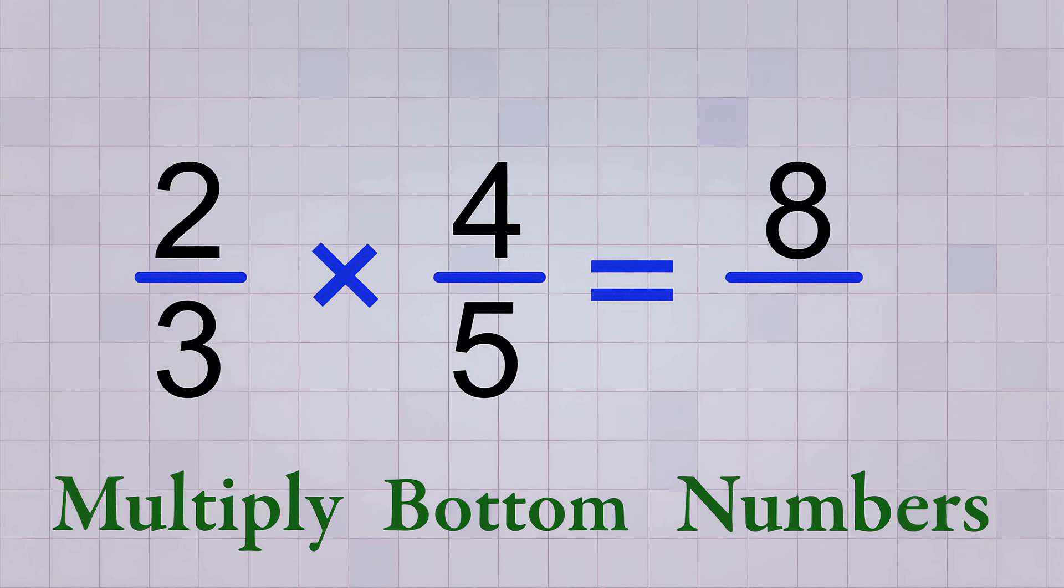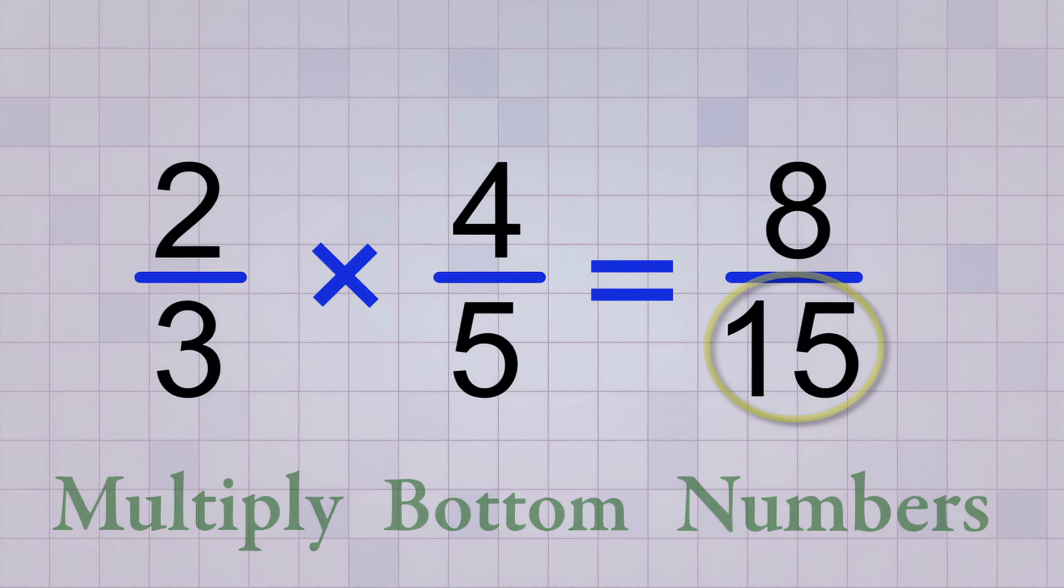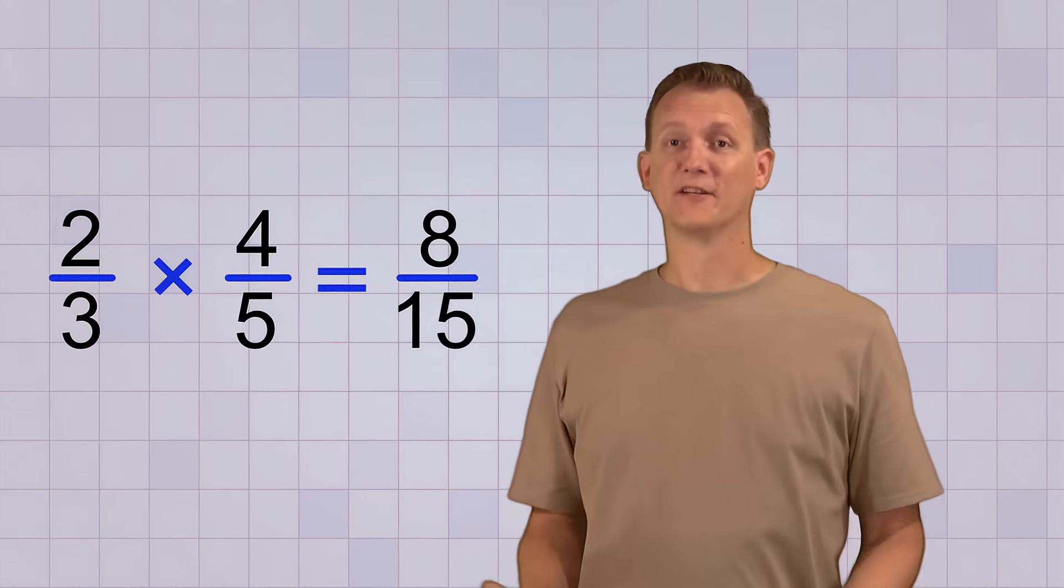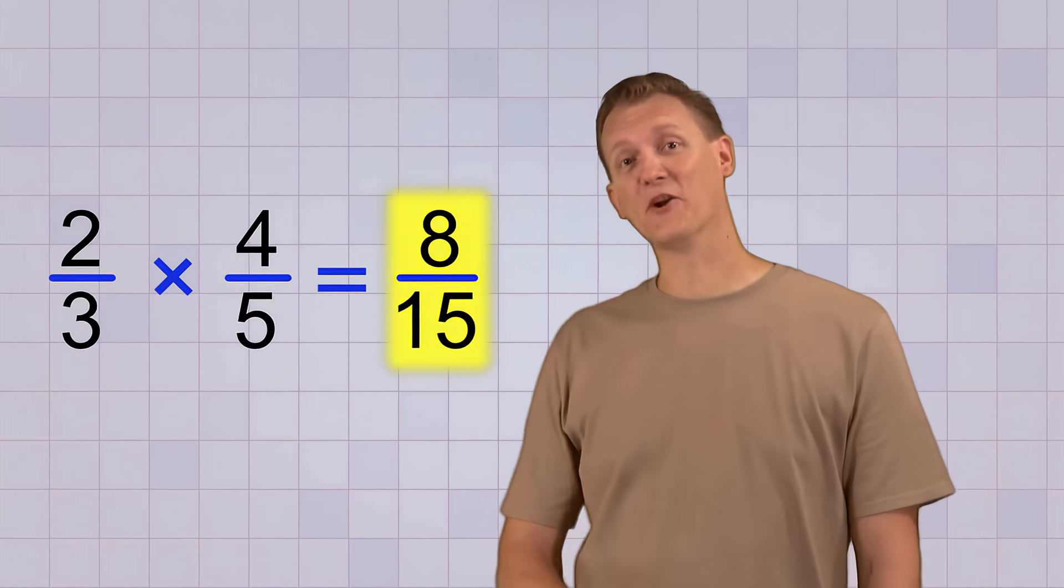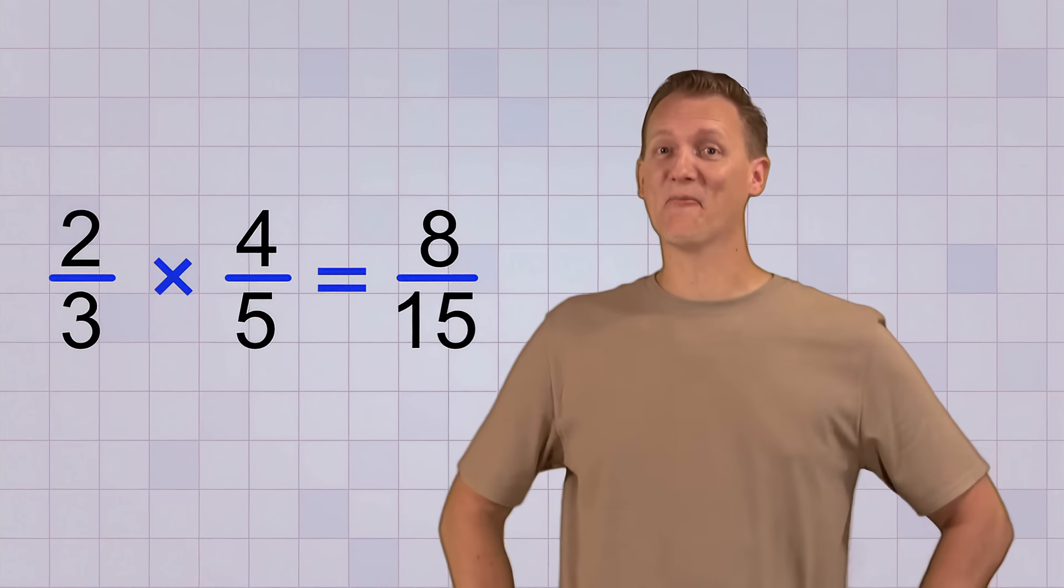3 times 5 equals 15, so 15 is the bottom number of our answer. There we have it. 2 over 3 times 4 over 5 equals 8 over 15. See how easy that was?